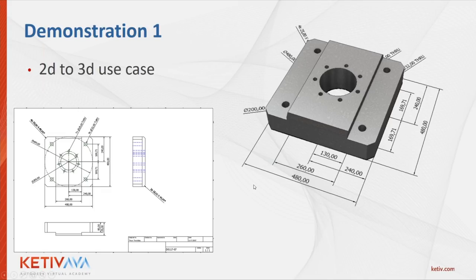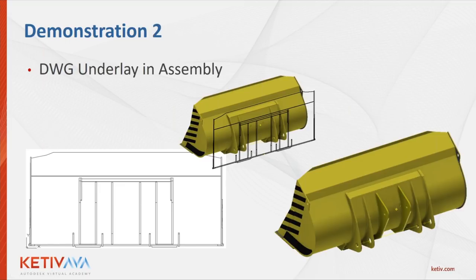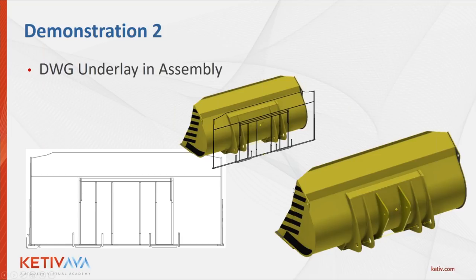I'm also going to show how you can use your DWG underlay information inside of a drawing — that was added in Inventor 2017. Then in our second use case, we'll look at how you could use a DWG underlay as an assembly skeleton. I have a drawing in AutoCAD showing how I want a loader bucket to go together, with a couple of ribs missing. We'll bring those ribs in and use the DWG underlay to locate exactly where they go, then change their location and see how it updates automatically.